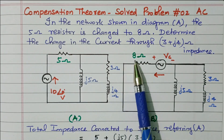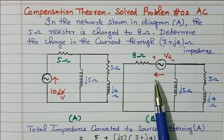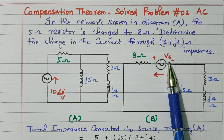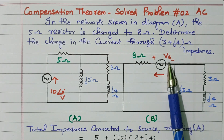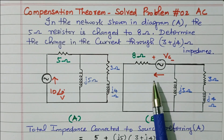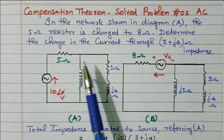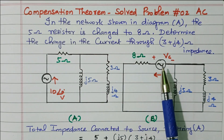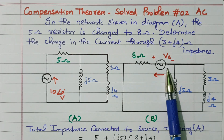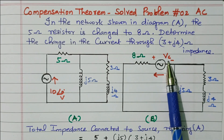So in the compensation theorem, if any change is made in the resistor value, there will be an opposing voltage or current produced. That can be identified by the compensation voltage Vc. This Vc gives the opposing voltage or current. See the current direction — it is opposing. So while changing the resistor value, we need to identify what is the opposing voltage given, that is given by the compensation voltage.